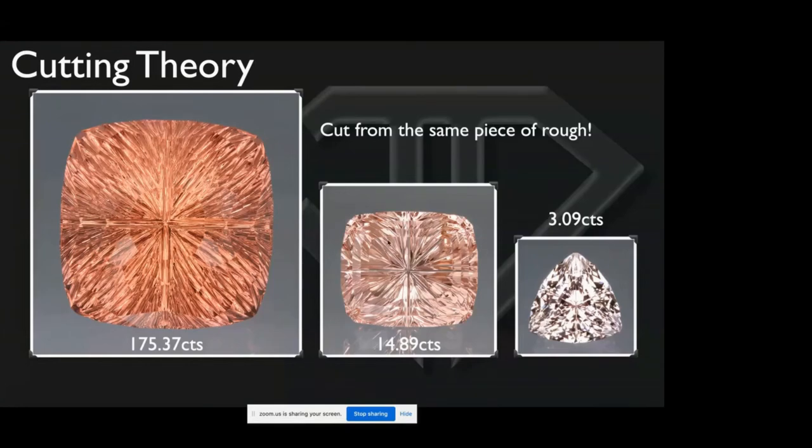Another factor which as a cutter I consider is why I don't saw certain pieces up. Like aquamarine sometimes comes out of the mine in this beautiful big crystal. I say to the miner, you know, if I cut a 600 carat gemstone out of that, who's going to use it? It's going to be hard to sell. Well what happens when you saw it up? This is what happens: you lose a lot of color.